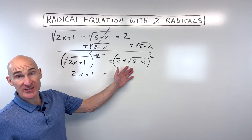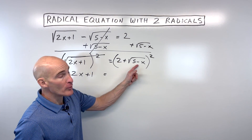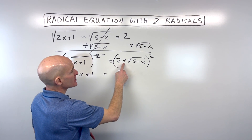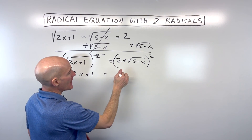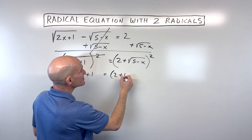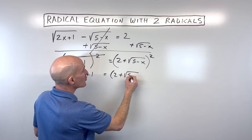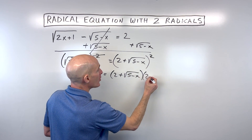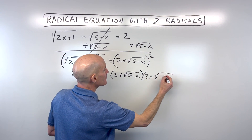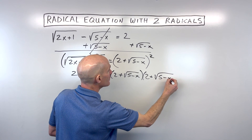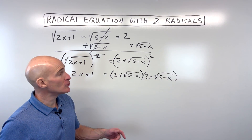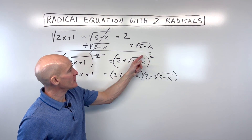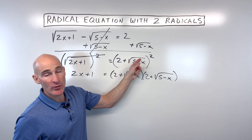On the right side, we have a binomial — two terms separated by plus or minus. You want to think of this as the quantity times itself. What some students mistakenly do — and you don't want to make this mistake — is just square the 2 and then square the square root separately.